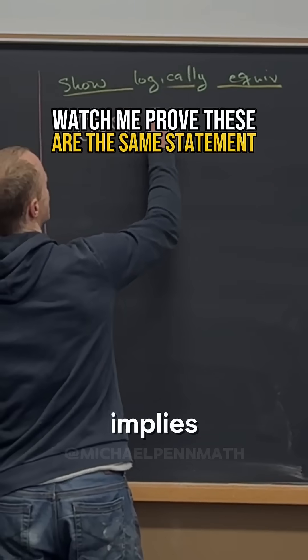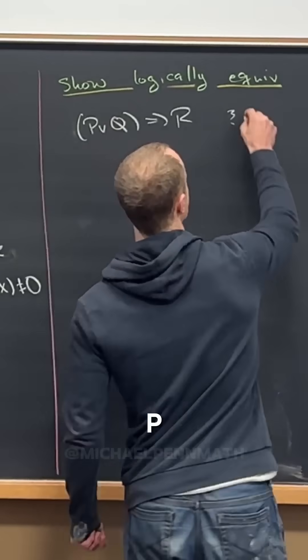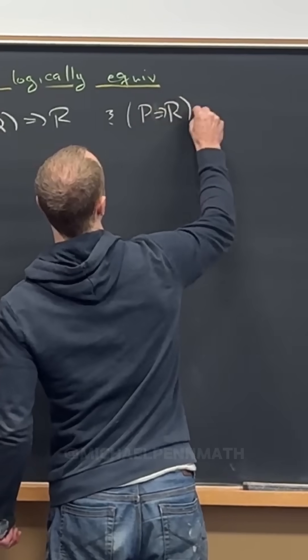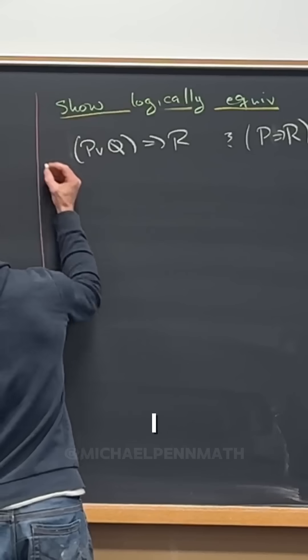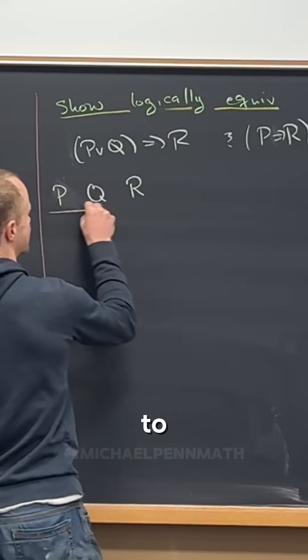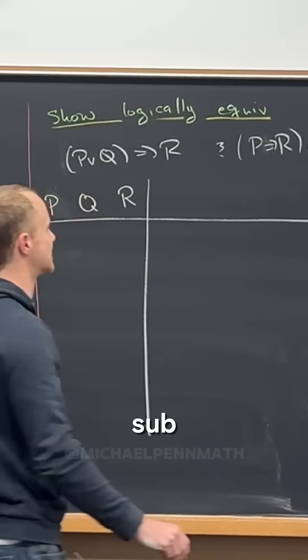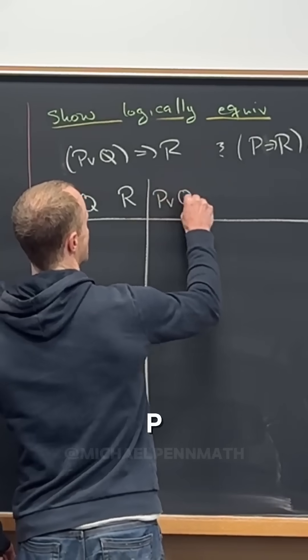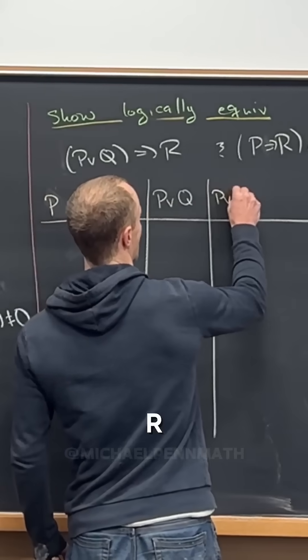P or Q implies R, and P implies R, and Q implies R. I mean, it's kind of your choice how many sub-steps to put in here, but what sub-steps do we think we should put in? Maybe like P or Q, then we might as well just put P or Q and R right here.